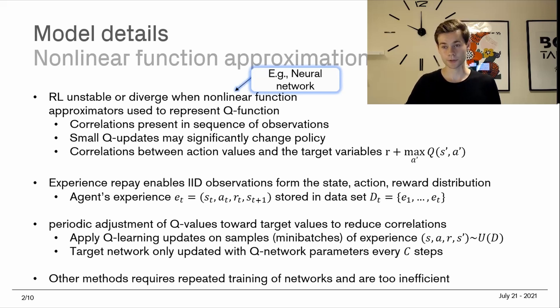What was done in this paper instead, and which was proven to be quite effective, is something called experience replay. That enables IID observations from the state action reward distribution. We said in the beginning, the first problem is that correlations are present in the sequence of observations. We would like some way of training these networks, but not just using the direct feedback that we're getting. The way we do this is we accumulate the agent's experience.